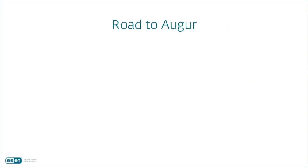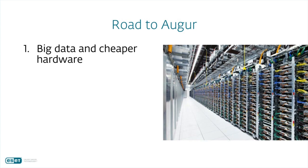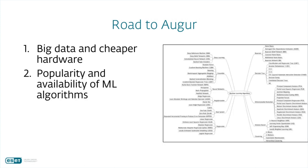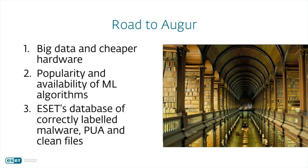There were three main things that helped us build our own machine learning engine. The first was that big data became available — there are solutions and services offering the power to handle big data, so we have the hardware and software able to handle that. Also, machine learning became very popular, with new algorithms available that you can use for different purposes or combine. The third thing was a vast database that we built of items correctly labeled as malware, potentially unwanted, and clean files.